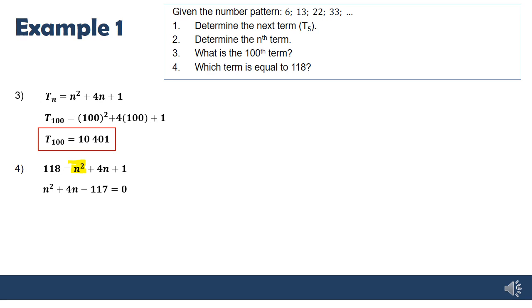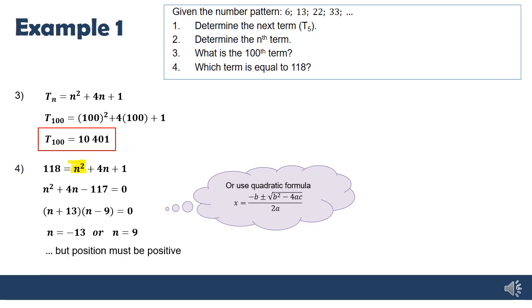So setting equal to 0, I then either factorize or I can use the quadratic formula to work out the values of n. But now n can't be a negative number because we're talking about the position. So it has to be a positive value. It's a real thing. It's a position in a pattern. So we're going to cancel n equals negative 13.